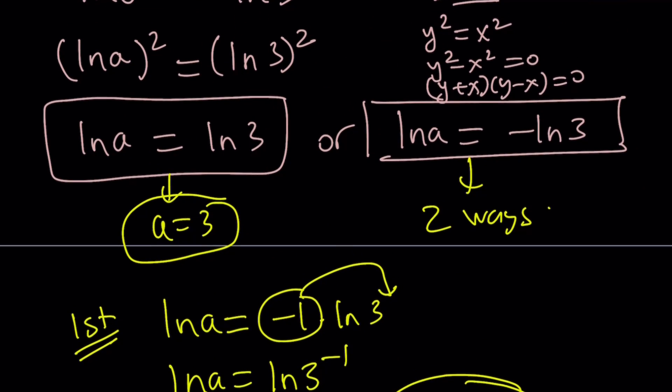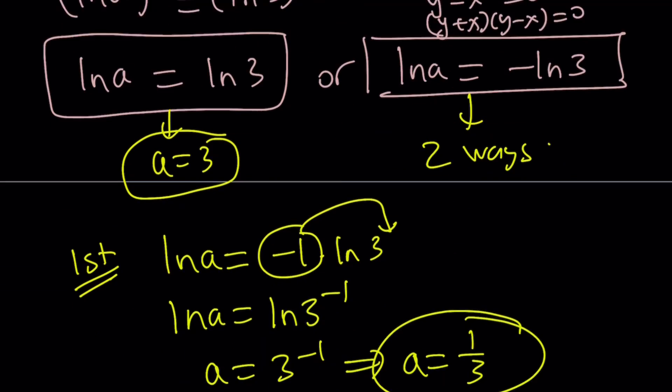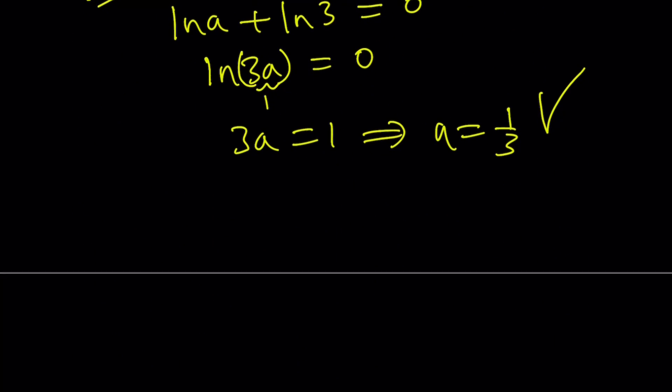So, we've found so far two values for a: a equals 3 and a equals 1 third. So, are those the only solutions? Let's go ahead and explore a little bit more.